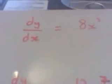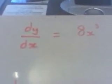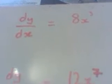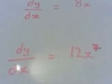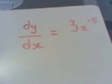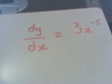So here's your questions to get your teeth into. First of all dy/dx equals x cubed, then dy/dx equals 12x to the 7, dy/dx equals 3x to the minus 5. So if you write those down and if I can get them on the screen, press pause and try to work them out.